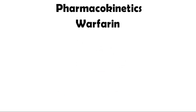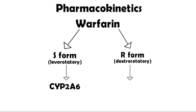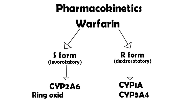Pharmacokinetics of warfarin. The commercial preparations of warfarin usually contain a mixture of enantiomers, namely the S-form and the R-form. The S-form is the levorotatory enantiomer whereas the R-form is the dextrorotatory enantiomer. These are metabolized separately. The S-form is metabolized by the CYP2C9 system of enzymes whereas the R-form is metabolized by CYP1A and CYP3A4. The S-form is mainly metabolized by ring oxidation whereas the R-form is mainly metabolized by side chain reduction.